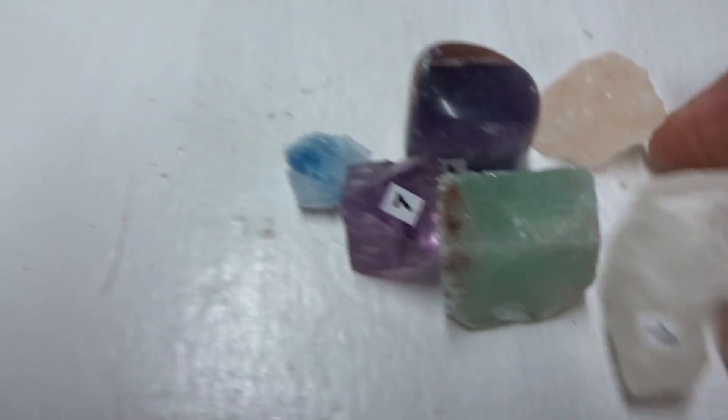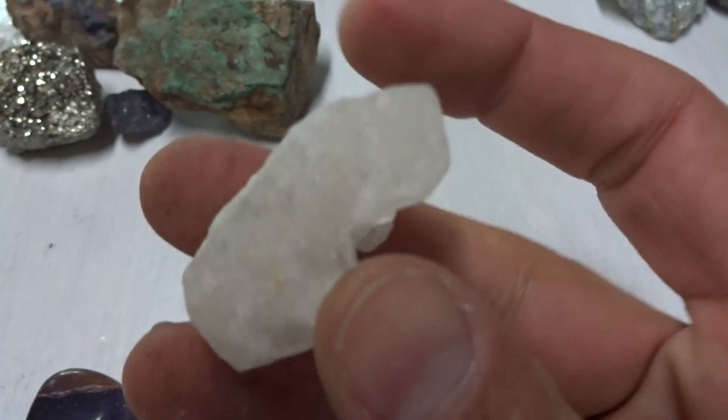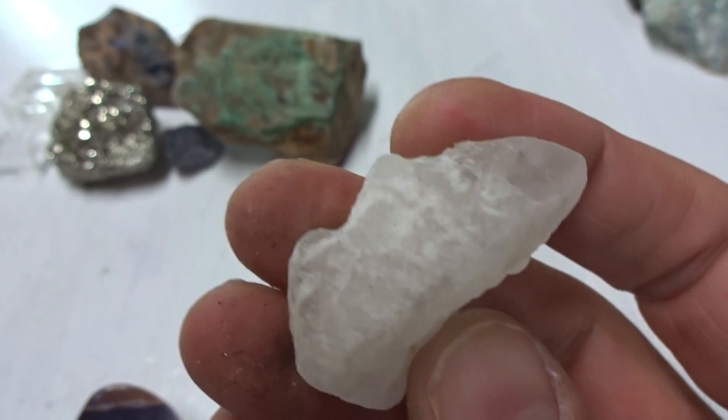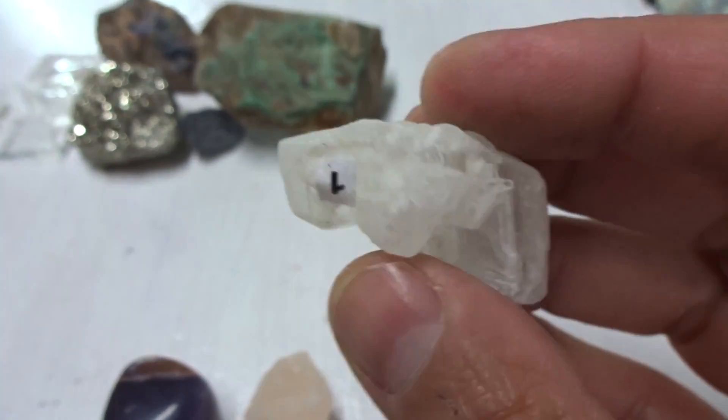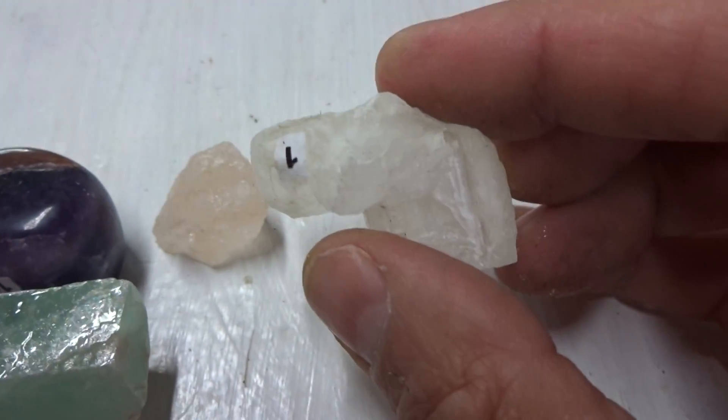Other minerals are called evaporites. They precipitate chemically, such as the halides. The halides are a family. Let's take a look at the halides. This is halide table salt. If you tasted it, it would taste salty. It's sodium chloride.